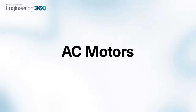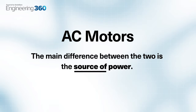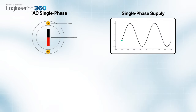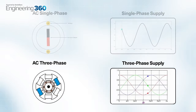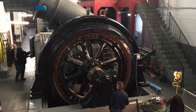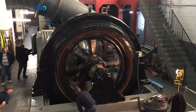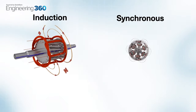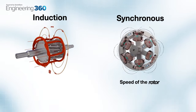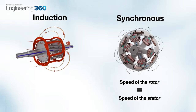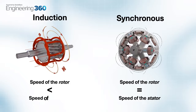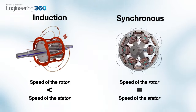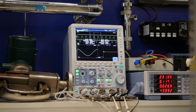Now let's take a closer look at AC motors. The main difference between the two is the source of power. DC motors run on a single-phase supply, whereas AC can run on either single or three phase, with three phase being the most common in industry due to its ability to transmit higher loads. AC motors can be broken down into two distinct types: induction and synchronous. For synchronous motors, the rotor speed equals the stator speed, while for induction motors the rotor speed is less than its synchronous speed — which is why induction motors are also known as asynchronous motors.